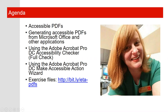Today's session covers how to use Adobe Acrobat Pro DC to create PDFs that are accessible to people with disabilities. That involves talking about what it means for a PDF to be accessible, generating accessible PDFs from Microsoft Office and other applications, and using Acrobat's Accessibility Checker and Make Accessible Action Wizard to evaluate the accessibility of a PDF and make basic accessibility fixes. On the screen is a link to access the exercise files used in the classroom hands-on workshop — I'll type that URL in the chat.